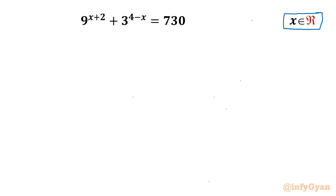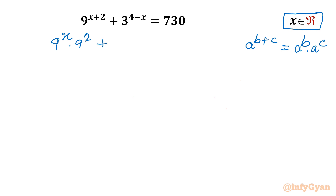Let us get started by writing one powerful exponent law: a power (b plus c) is equal to a power b times a power c. Using this, we can write 9 power x times 9 squared plus 3 power 4 times 3 power minus x, equal to 730.